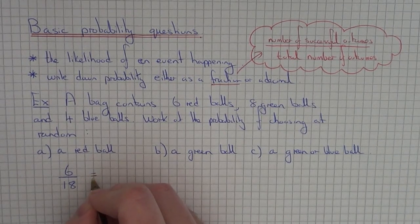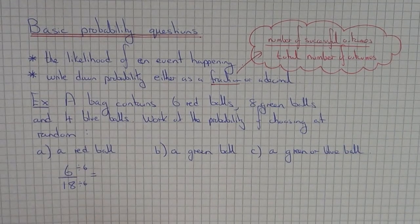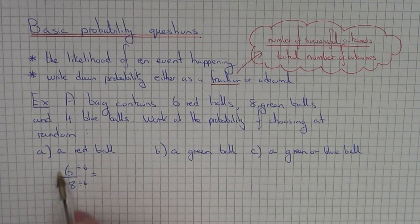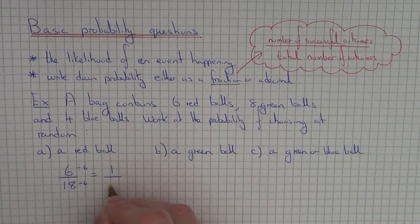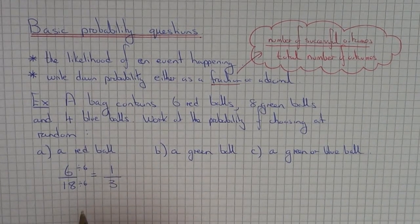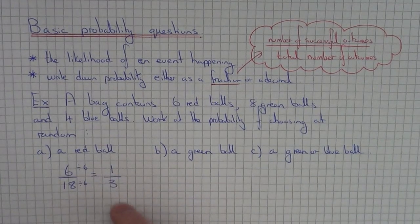You can then simplify this a little bit further by dividing the numerator and denominator by 6 because they are both in the 6 times tables. So 6 divided by 6 is 1 and 18 divided by 6 is 3. So this is the probability of choosing a red ball at random from the bag.